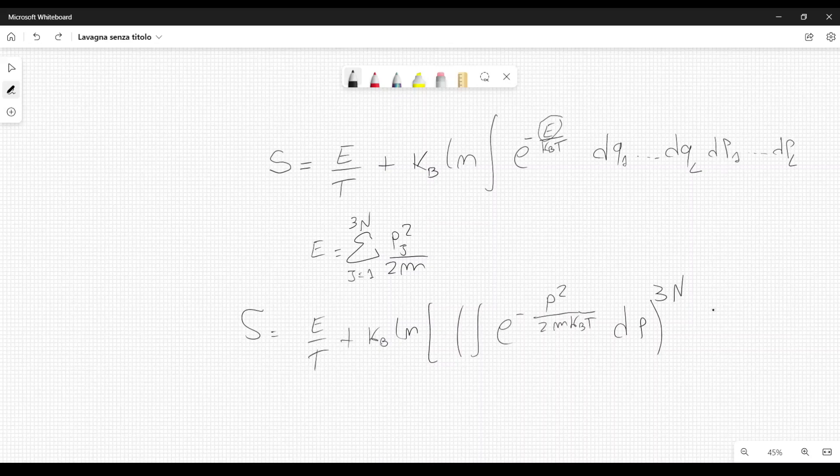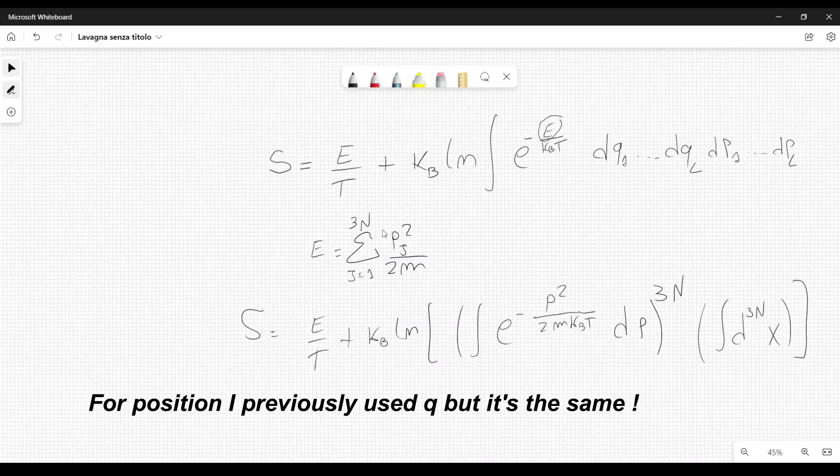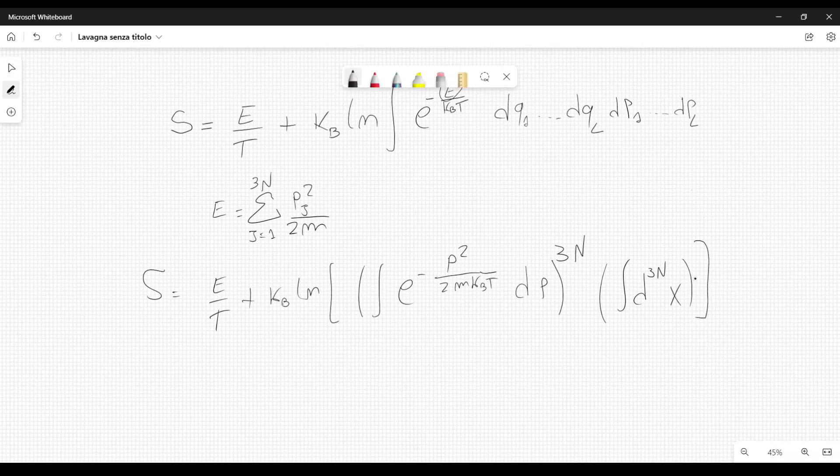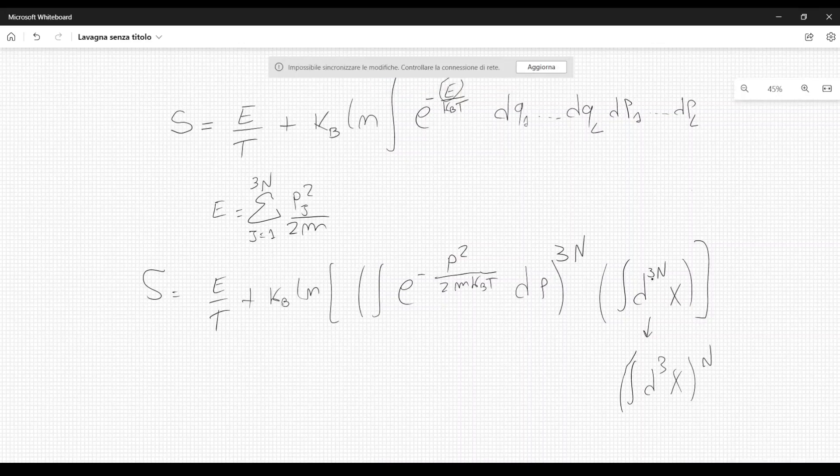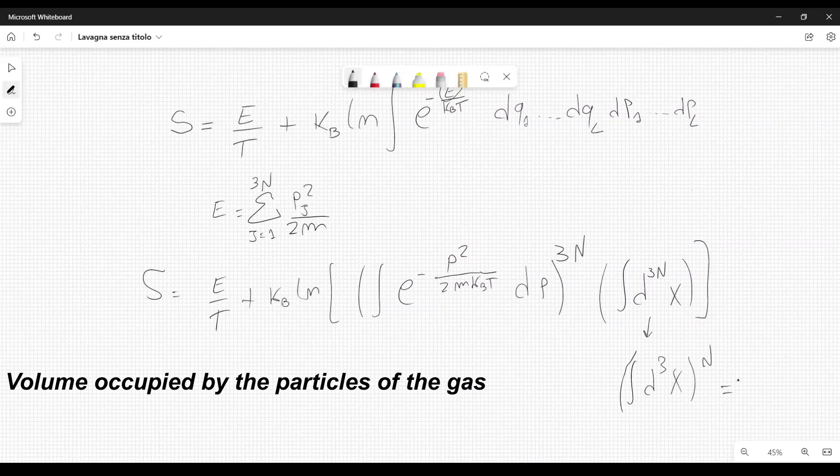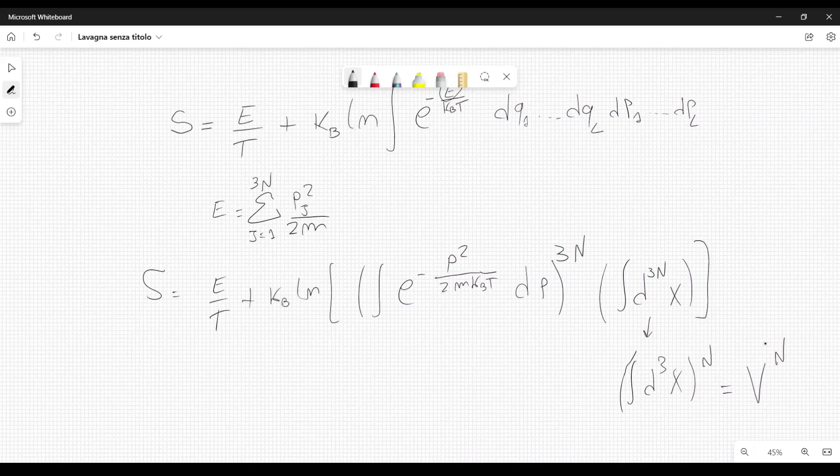Then we also have the integral over the positions because we have a similar integral for positions. We have integral over d3n x. We can also rewrite this as integral d3x to the power n because we have n particles and we have to integrate over the volumes. So this is just the volume to the power n. We are integrating over the space occupied by each single particle, and each single particle will move in some kind of volume. Due to symmetry, we just have n times those volumes, therefore V to the power n.